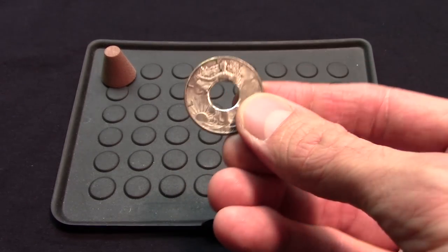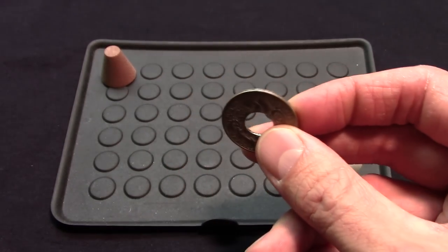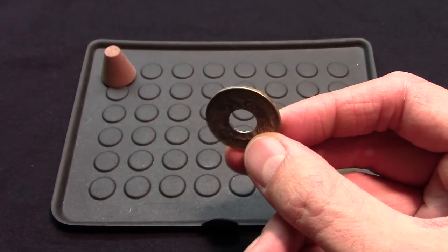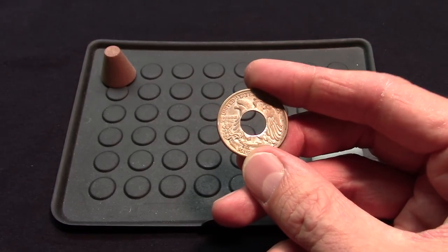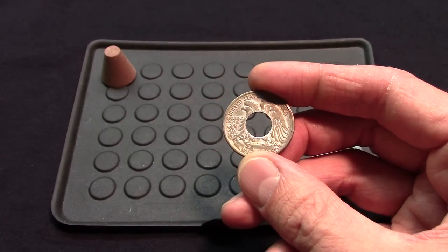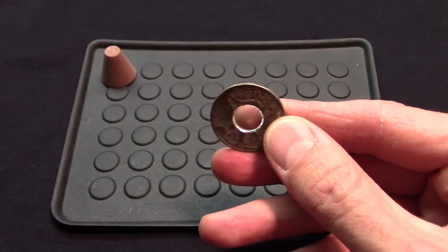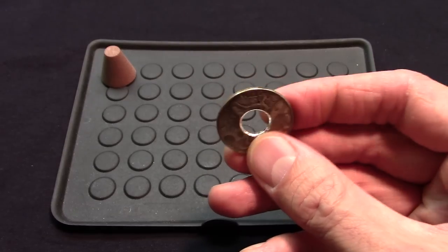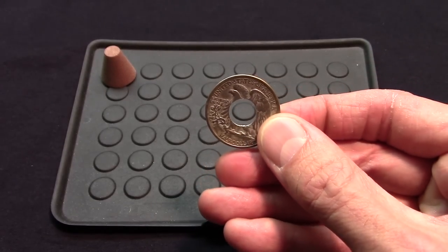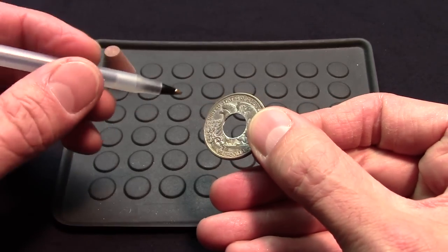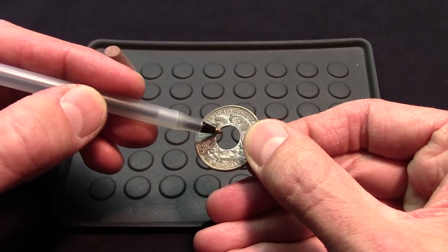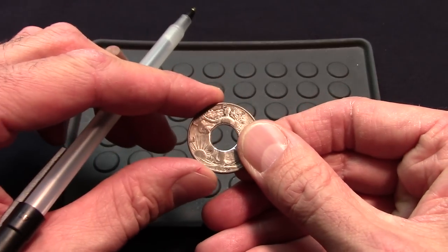After you've selected your coin, this is a Walking Liberty half dollar, and you've annealed it, quenched it of course, and you've center punched your hole depending on what size. This one here is a 7/16ths. The next step, and it's in my opinion one of the most crucial steps, is you actually want to go ahead and remove the harsh edges on both sides of the coin.